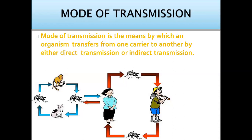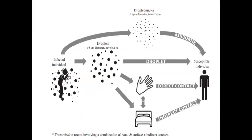After the portal of exit, there is something called the mode of transmission. This transfer is known as the mode of transmission. In this case, a droplet can land directly on another person's hand — this is direct contact.